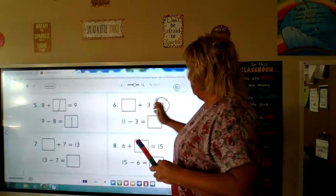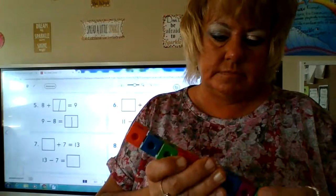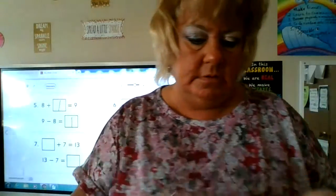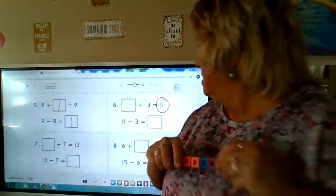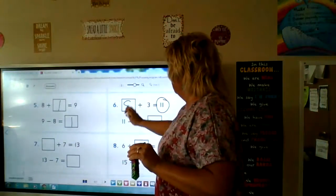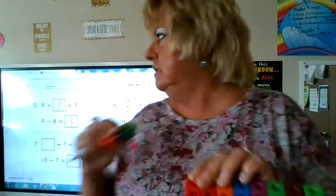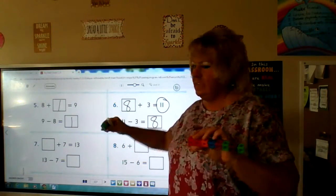Our whole is 11 on the next one. 11 minus 3 — the parts of 11 are 3 and, if we take away 3, we have 8 left over. 8 plus 3 is 11, so 11 minus 3 is 8. To check: is 8 plus 3 equal to 11? Yes, 8 plus 3 is 11.